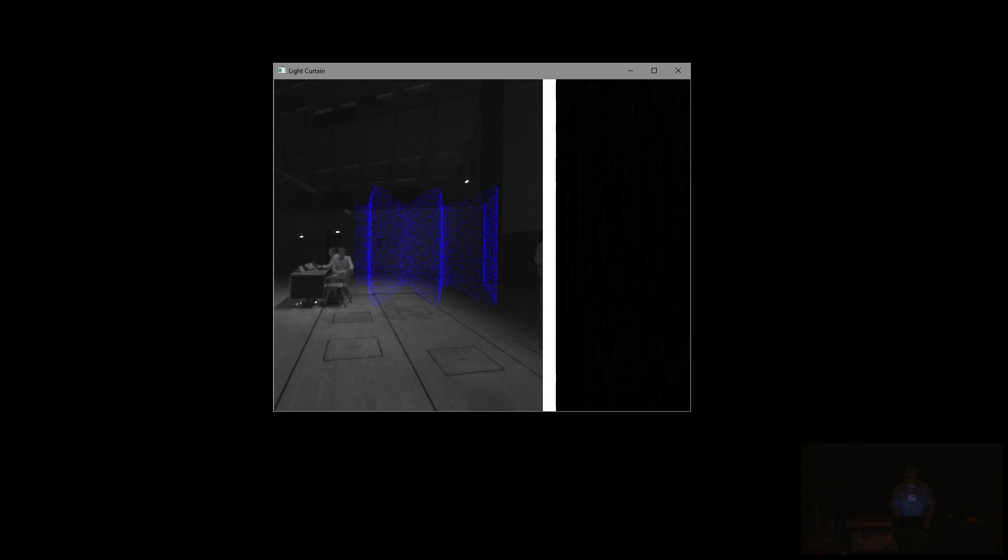So now we're imaging a cosine-shaped curtain. This curtain demonstrates the flexibility of the device to create any ruled surface. As Robert walks along the curtain, it detects him easily.